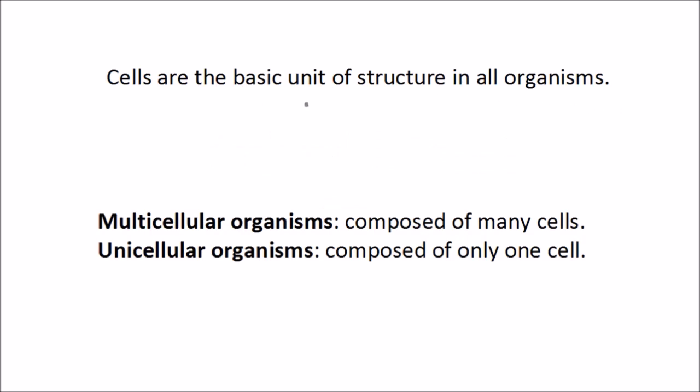Cells are the basic unit of structure in all organisms. They're the smallest unit of life and the smallest structures capable of surviving on their own. When we talk about organisms made of cells, there are two main types: multicellular organisms, which are composed of many cells, and unicellular organisms, which are composed of only one cell.